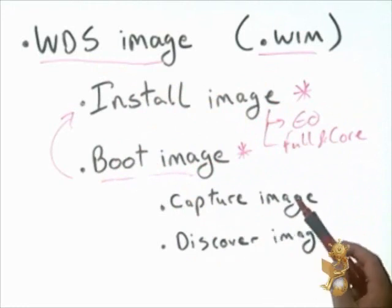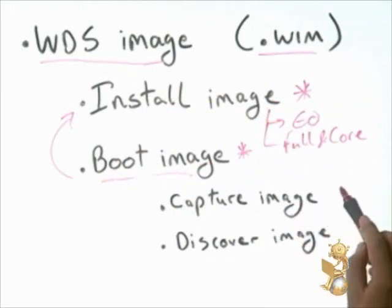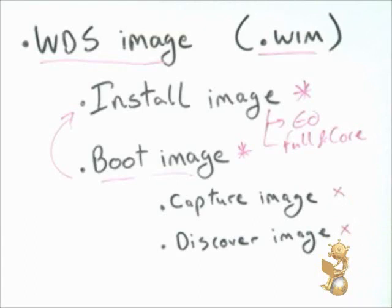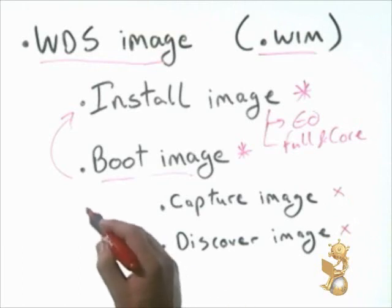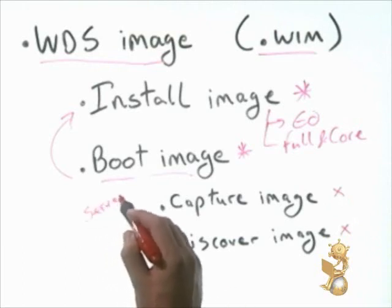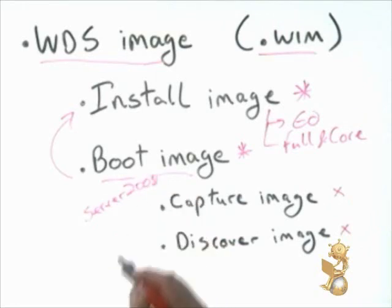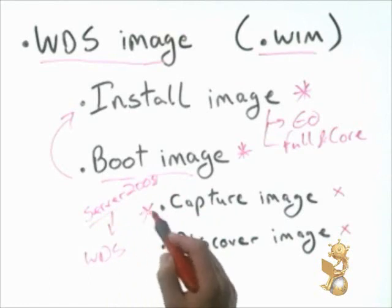Boot images are broken down into two sub-image types: the capture image and the discover image. A capture image, which is created by WDS, is used to capture an operating system up to a Windows Deployment Services server for later deployment. For example, if you have an installation of Windows Server 2008 and want to copy it to a WDS server, you use a capture image — you create the capture image on the WDS server.